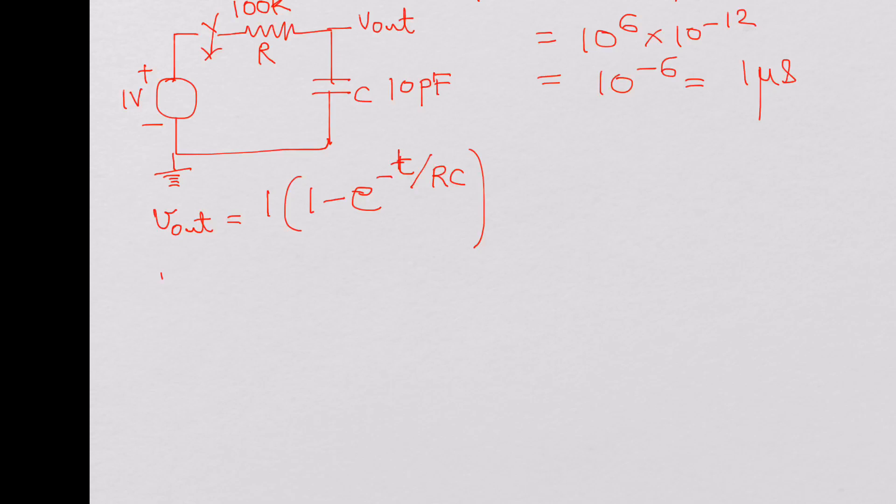So now this V out equation becomes 1 minus e power minus T divided by 1 micro. You have T, the time in the numerator, and in the denominator is RC which is 1 micro.